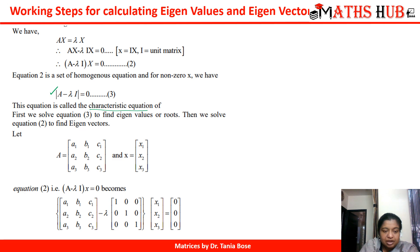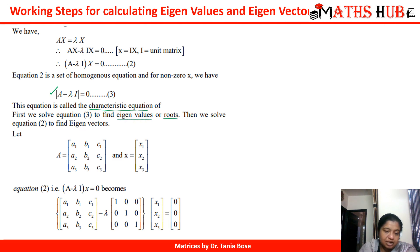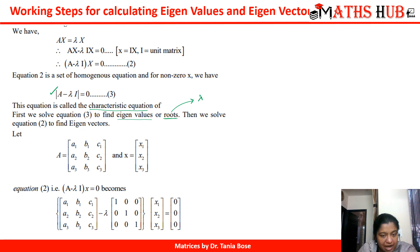The characteristic equation is given by the modulus of A minus lambda I equal to 0. When we solve this characteristic equation we will get some roots. Those roots are called the eigenvalues — the roots of the characteristic equation. Solving it gives us the values of lambda, and these lambdas are the eigenvalues.